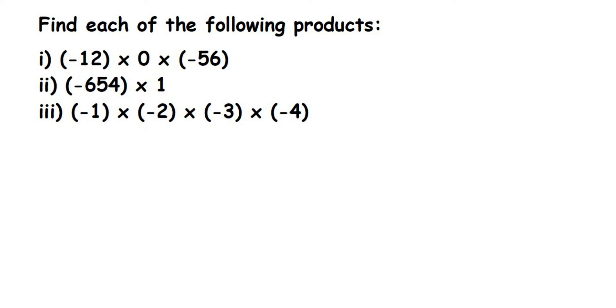Hey everyone, here is a question from integers. The question is find each of the following products. We have not been given to find by using any property or any laws, nothing. We have to just multiply and get the answer. The only thing is we have to make sure about the negative signs when solving it.